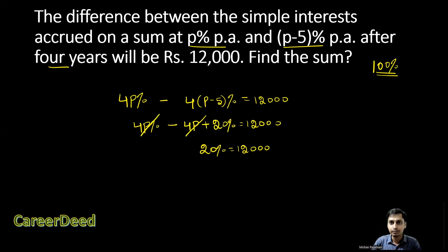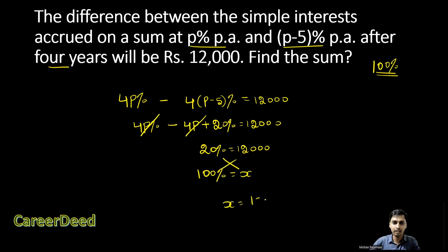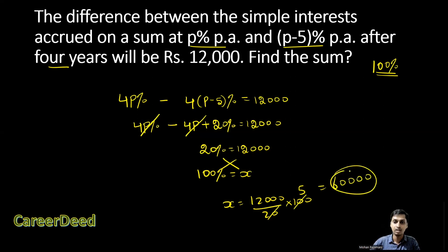Now you have to find the sum. The principal is always 100%. So we set 100% = x. Cross-multiplying: x = (12,000 / 20) × 100 = 12,000 × 5 = 60,000. So the principal amount — the sum — is rupees 60,000.